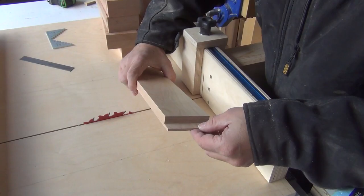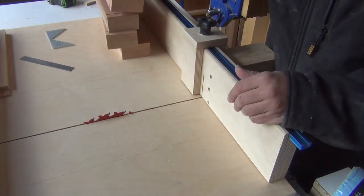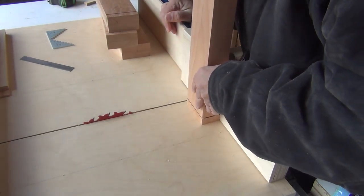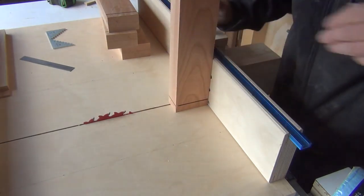So now I've reset the guide block and the blade height and used my test piece again to cut off the excess.